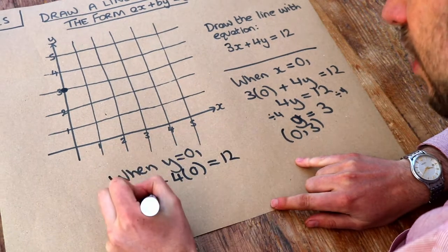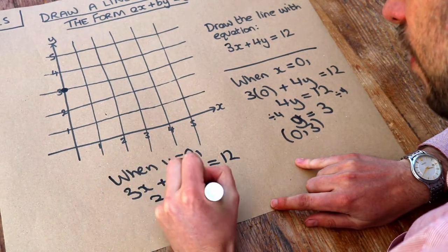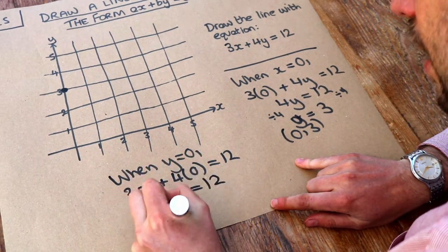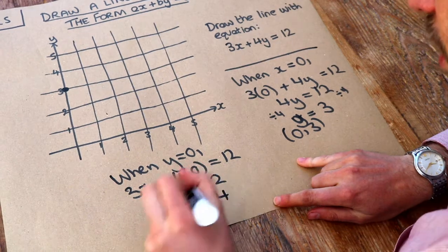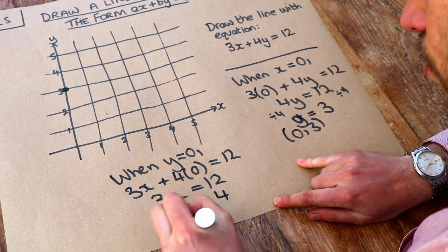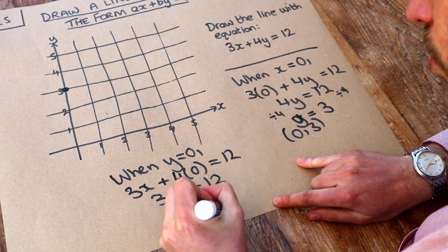Dividing both sides by three, we get x is four. So that gives us the point x is four, y is zero.